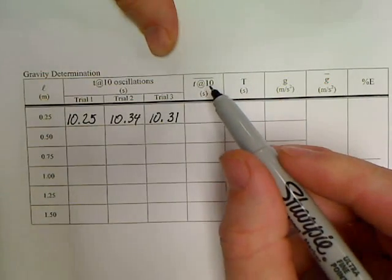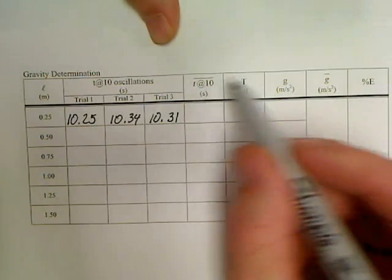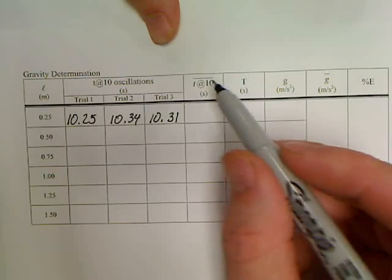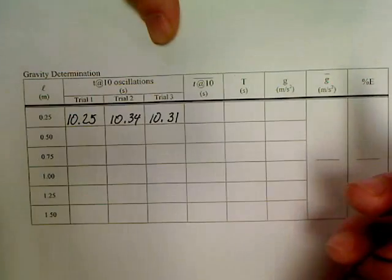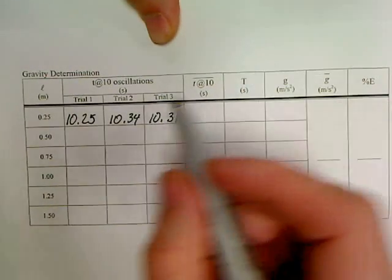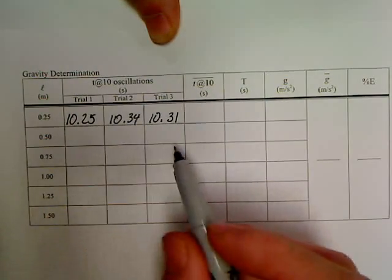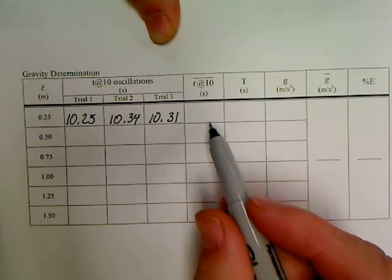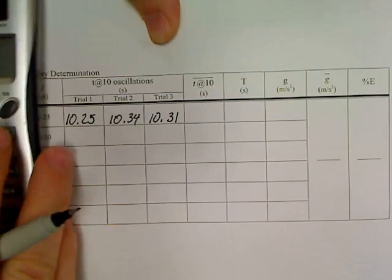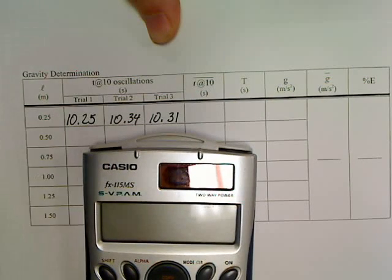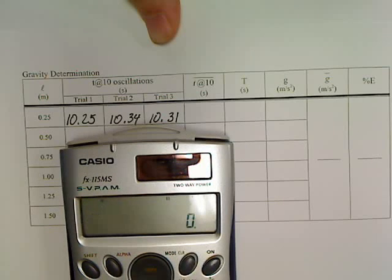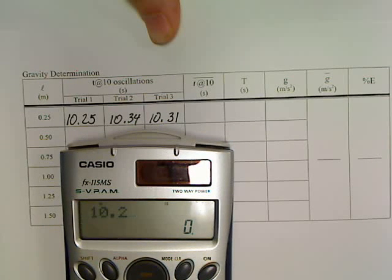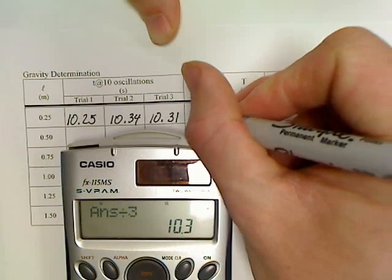These first three numbers, whenever in math you see this column over here where you've got like T at 10 with a line over it, that T at 10 with a line, anything in math with a line over it like this, that just means an average. So what you're going to do with the first three numbers in every one of these categories is average these three numbers and put in this first blank over here. So like for me, my first category of numbers is going to be 10.25 plus 10.34 plus 10.31. I'm going to add those up, 30.9 and divide by 3 for an average of 10.30.